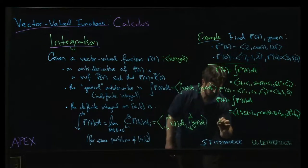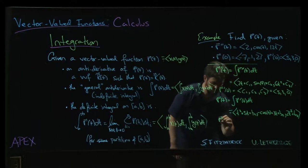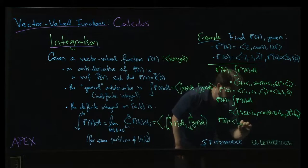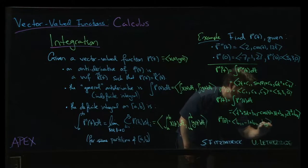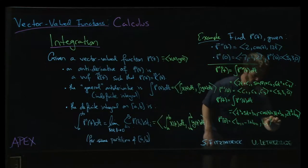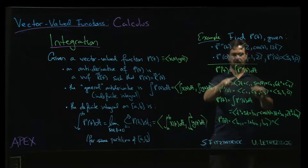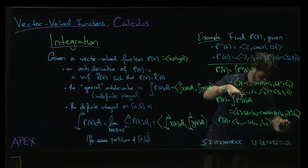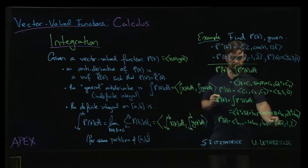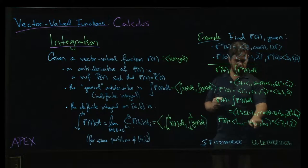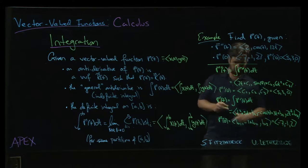So now, we can figure out what these constants b1, b2, b3 are because we know that r of 0 on the one hand is going to be b1 and then minus 1 plus b2 and then b3. But r of 0 is also given to us as minus 7, minus 1, and 2. So b1 has to be minus 7. b2 must be 0 to leave us with the minus 1. b3 has to be 2.